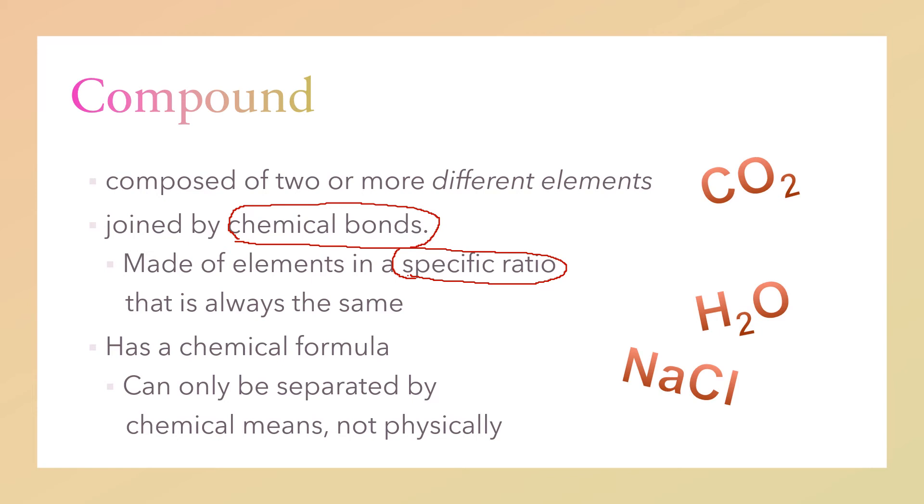Can only be separated by chemical means, not physical means. When you say chemical means, you need to add or it goes to a process where it needs to be separated. But it cannot be separated physically. Just for example, if you are going to separate gravel or stones from the sand, that's a physical means. But with chemical means, it undergoes to a process. That is the property of a compound. That is how compound differs from an element.